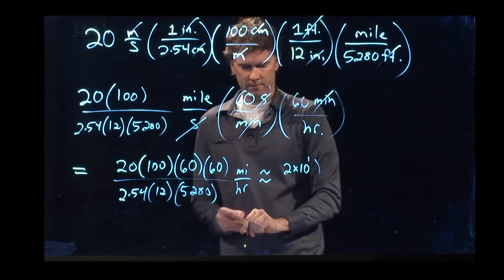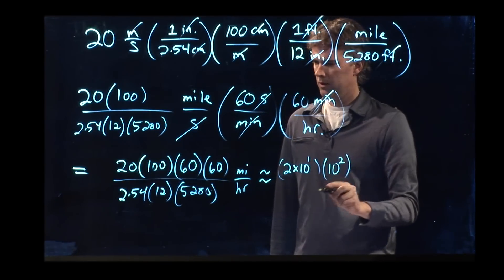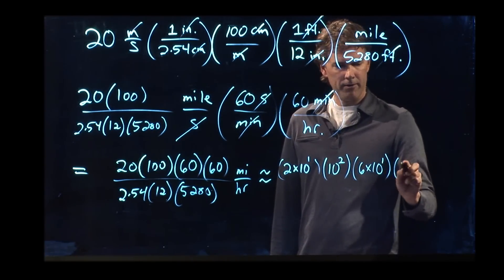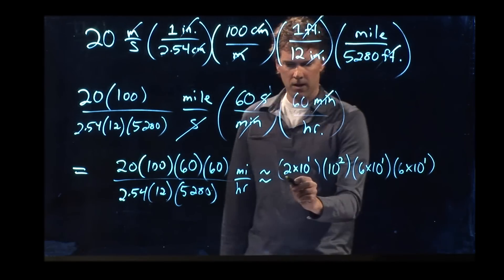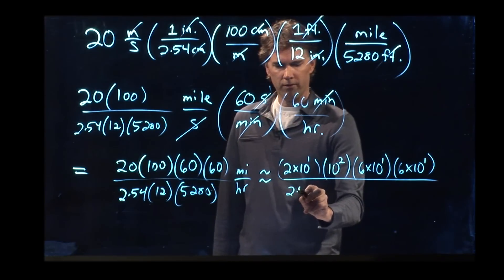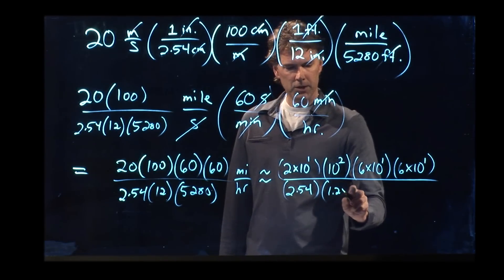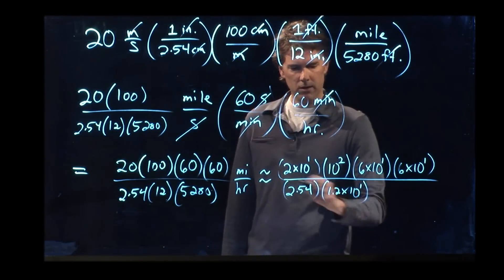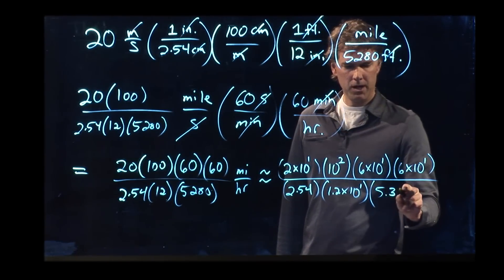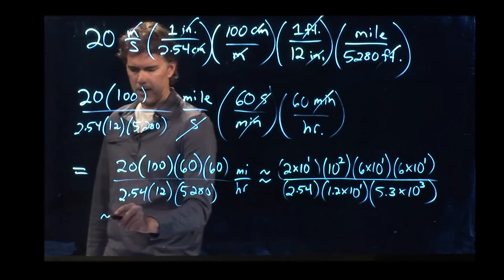So 20 is 2 times 10 to the 1, 100 is 10 to the 2, 60 is 6 times 10 to the 1, and we have another one, 6 times 10 to the 1. And then we are going to divide by 2.54 times 12, which is 1.2 times 10 to the 1, 52.80, which is 5.3 times 10 to the 3.